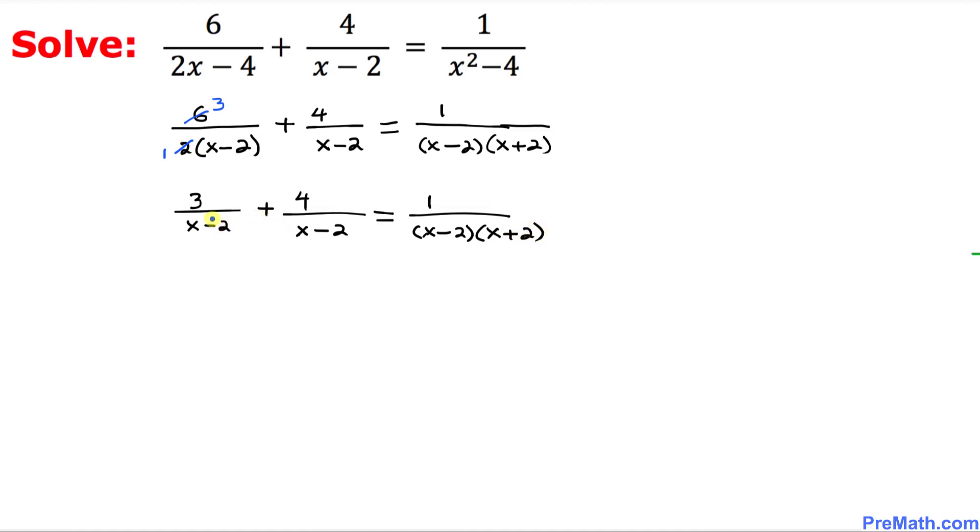Now let's focus on the denominators. We have x minus 2, another x minus 2, and another x minus 2. So we are going to write this one just once. And then let's look at another factor which is x plus 2. I am going to multiply by x plus 2 as well. Therefore, our least common denominator, or sometimes we call it least common multiple, turns out to be x minus 2 times x plus 2.